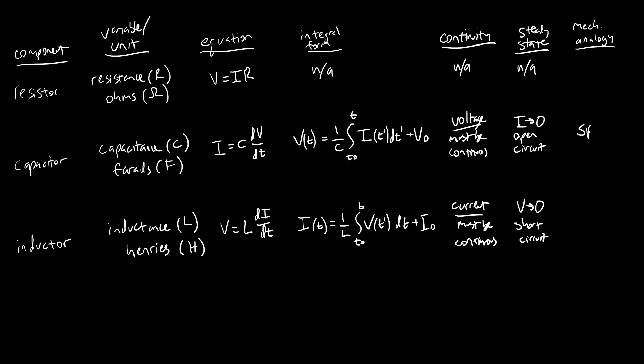So in that case, the capacitor is like your spring. The inductor is like your mass. So you can think of these as two different ways of storing energy. And the resistor is like your damper or friction, which is dissipating energy.